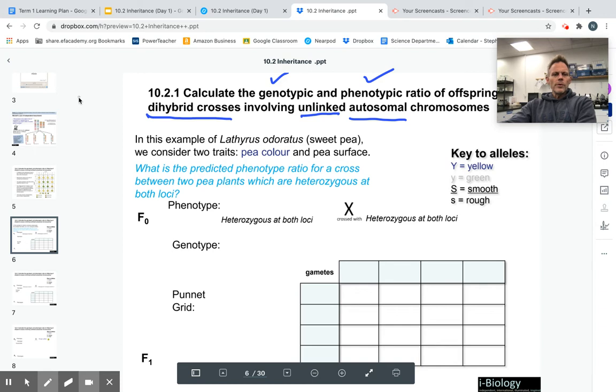When we were doing monohybrid crosses, we were only looking at the movement of one gene on one chromosome. In the example we're going to do, we're going to look at a pea plant, and we're going to look at color first. Pea plants can be yellow or green, and yellow is dominant. So we write big Y for yellow and little y for green.